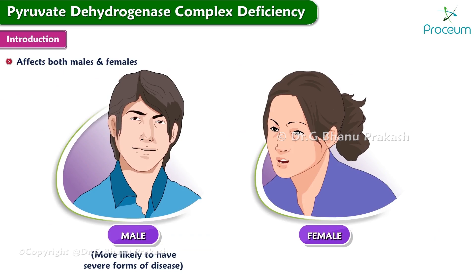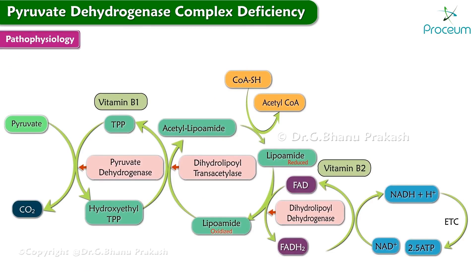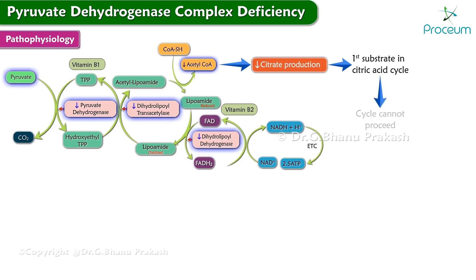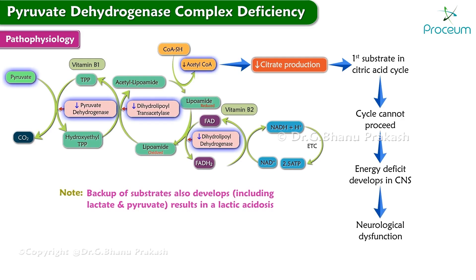However, males are more likely to have severe forms of the disease than females. Moving right along, let's now talk about the pathophysiology. The pyruvate dehydrogenase complex is responsible for converting pyruvate to acetyl coenzyme A during carbohydrate metabolism. Acetyl coenzyme A is necessary for citrate production. A deficiency in the enzymatic complex will limit citrate production. Since citrate is the first substrate in the citric acid cycle, the cycle cannot proceed and an energy deficit develops in the central nervous system, leading to neurologic dysfunction.